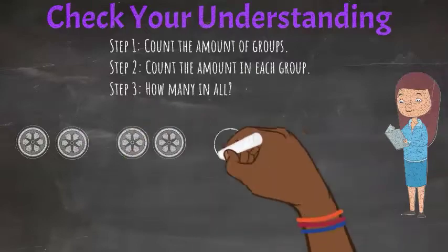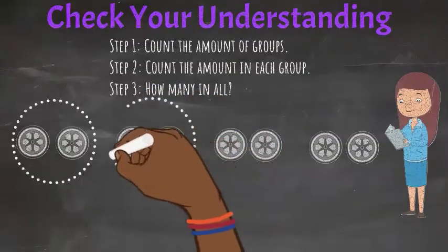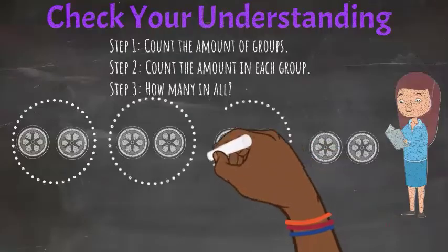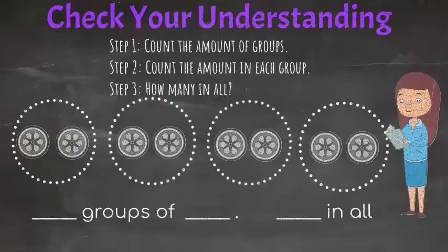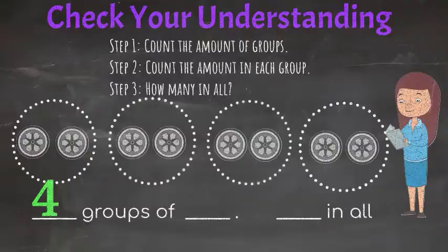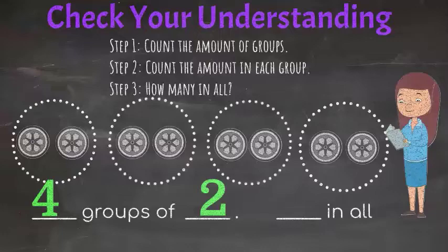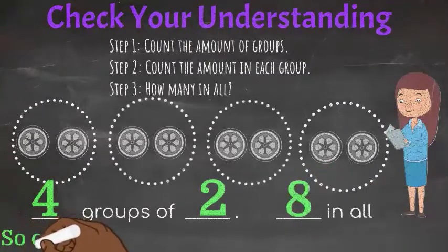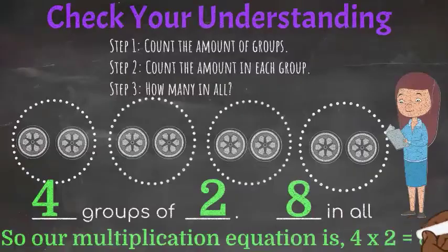So let's check your understanding to make sure you know what to do. I'm separating these into groups. The first step is to count the number of groups, then count the amount in each group, and then count the total amount. How many groups are there? That's right — the answer is 4. And how many are in each group? Two. And how many in all? Eight. So our multiplication equation is 4 times 2 equals 8.